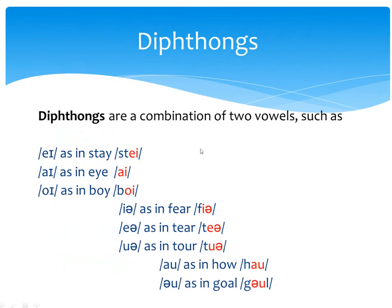Diphthongs are a combination of two vowels. For example, we have eɪ as in 'stay', and this is called a diphthong because it has two phonemes. We also have aɪ as in 'I', ɔɪ as in 'boy', ɪə as in 'fear', eə as in 'tear', ʊə as in 'tour', aʊ as in 'how', and əʊ as in 'go'.